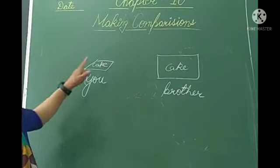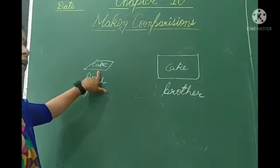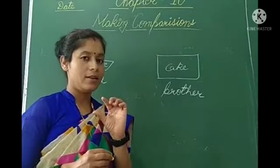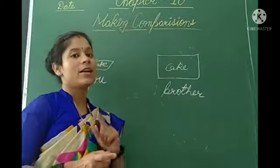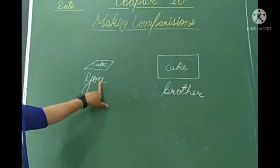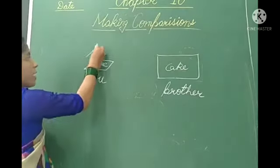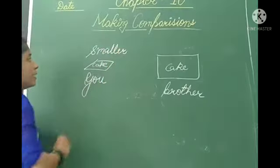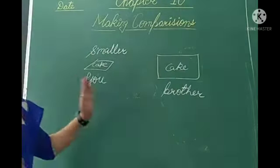You will say this one is small and this piece of cake is big. So when your mother gave you this piece of cake, what did you say? You said: I got a smaller piece of cake. So what are you doing? You are comparing. You said I got a smaller piece of cake.